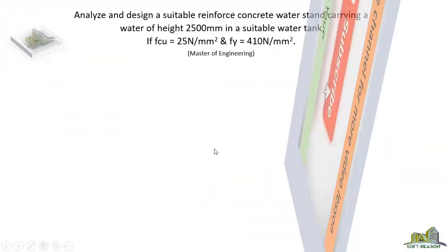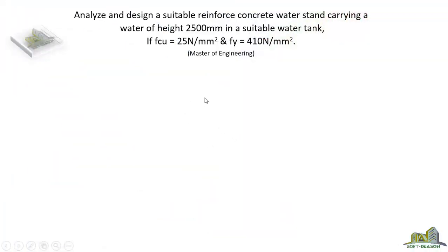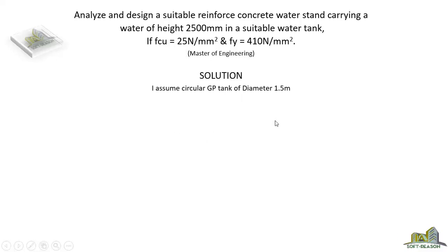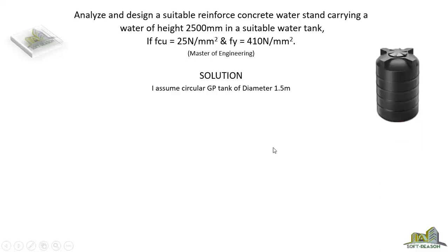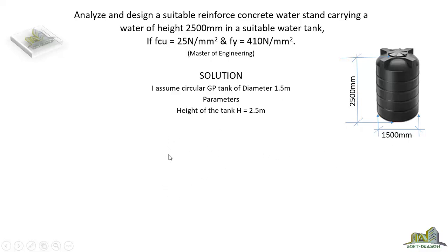Take your time to go through the lesson so as to understand all the calculations carried out. For the solution, I assume a circular GP tank of diameter 1.5 meters. The height of the tank has been given in the question as 2500 millimeters, and the assumed diameter is 1500 millimeters.